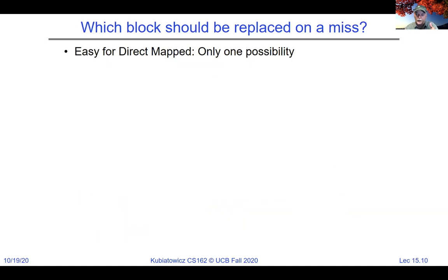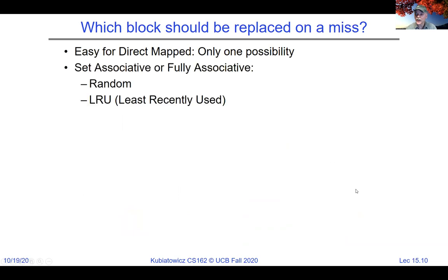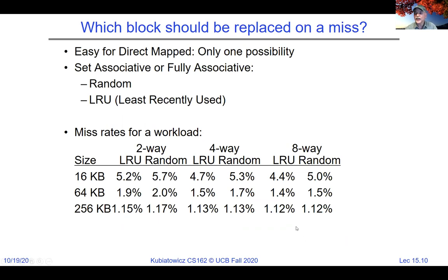On a miss, where do you replace? With direct-mapped, there's only one choice to kick out, so it's easy. With set-associative or fully associative, you have to pick — that's called the replacement policy. Options include random and least recently used (LRU). For caches, the difference between random and LRU is often very small, especially with larger, higher-associativity caches. The cost of tracking LRU is often not worth it for a cache — though that won't be the case when we get to paging.